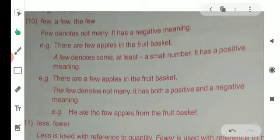A few means a small number but some quantity exists that can be used. A few denotes at least a small number. It has a positive meaning. All this cannot love a positive. For example, there are a few apples in the fruit basket.